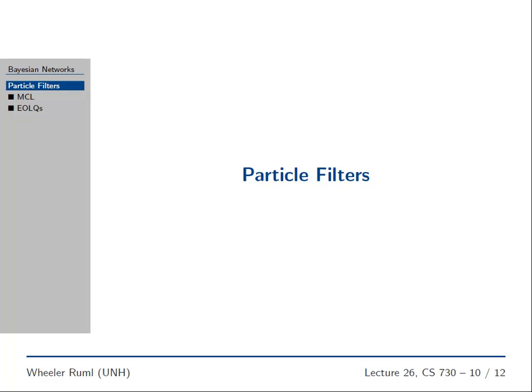Okay, particle filters. All right, you've seen Bayes nets. You know how to represent probability distributions. Sometimes though, it's really hard to. Sometimes you have a probability distribution over some really yucky thing like real valued space.